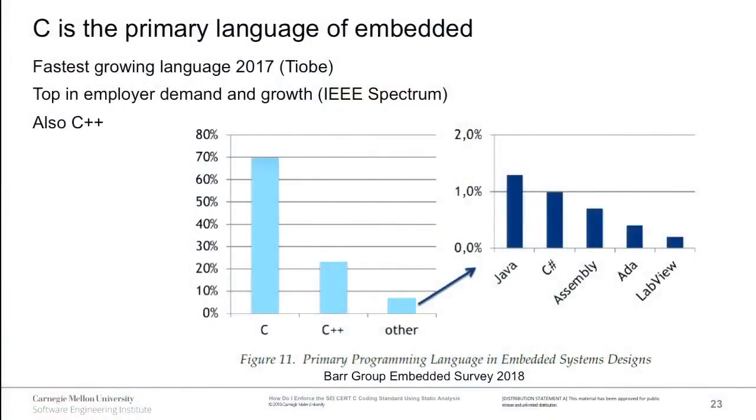The rise of embedded systems and IoT has caused a resurgence in C. C became last year the fastest-growing language according to TIOBE. IEEE Spectrum also shows C and C++ leading in employer demand and job growth. Java and C have been trading places at the top, but C has now pulled ahead. With bigger devices carrying more logic, C++ is used more frequently, since it's hard to model real-world systems purely in C.